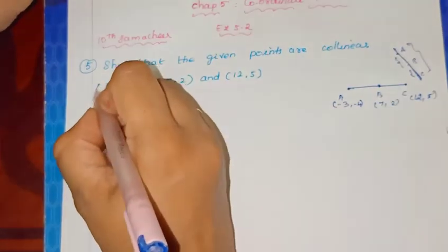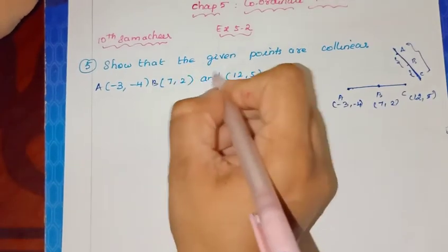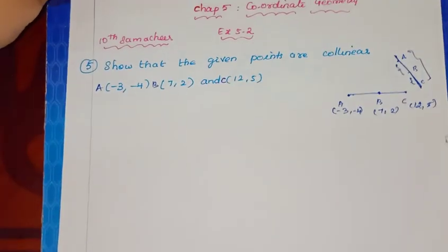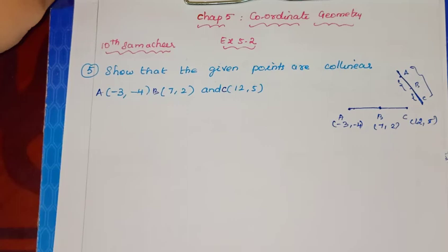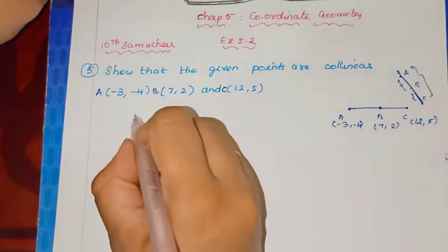Now if you have points A, B, and C, three points, if the slopes are equal, then we can say these points are collinear.